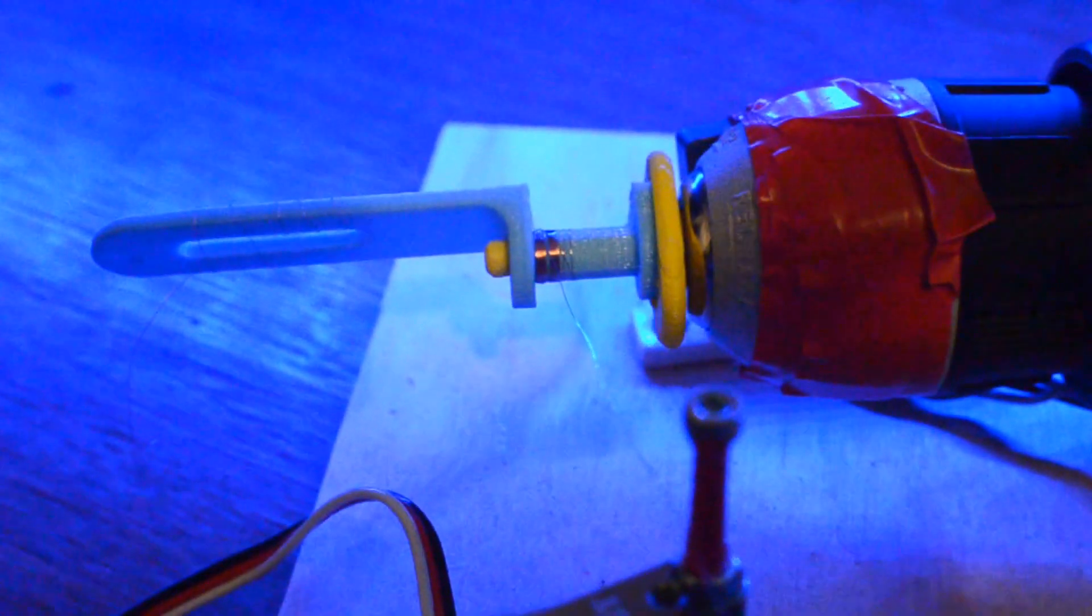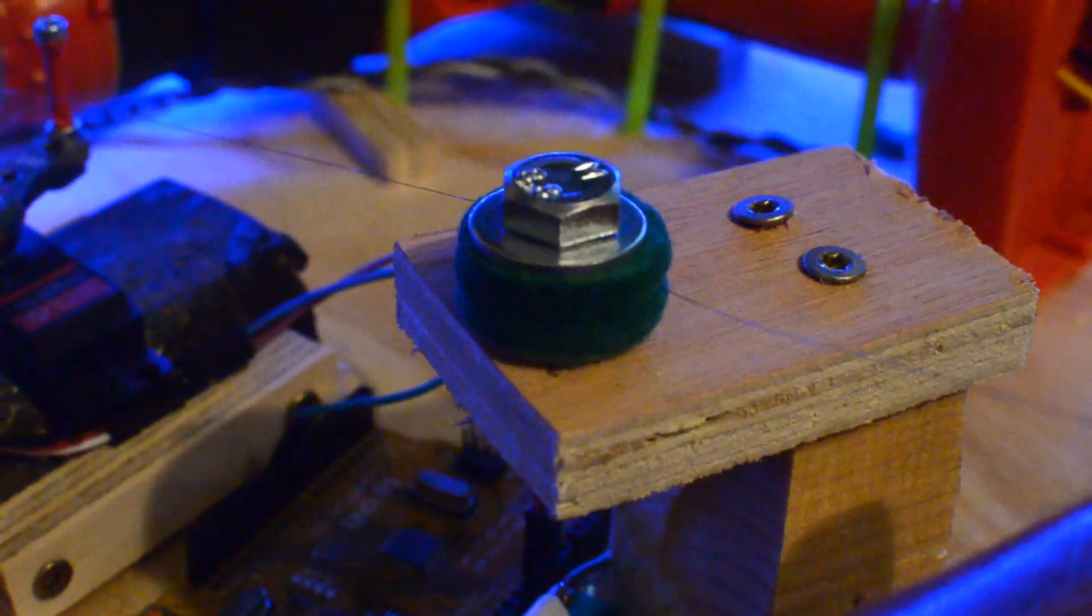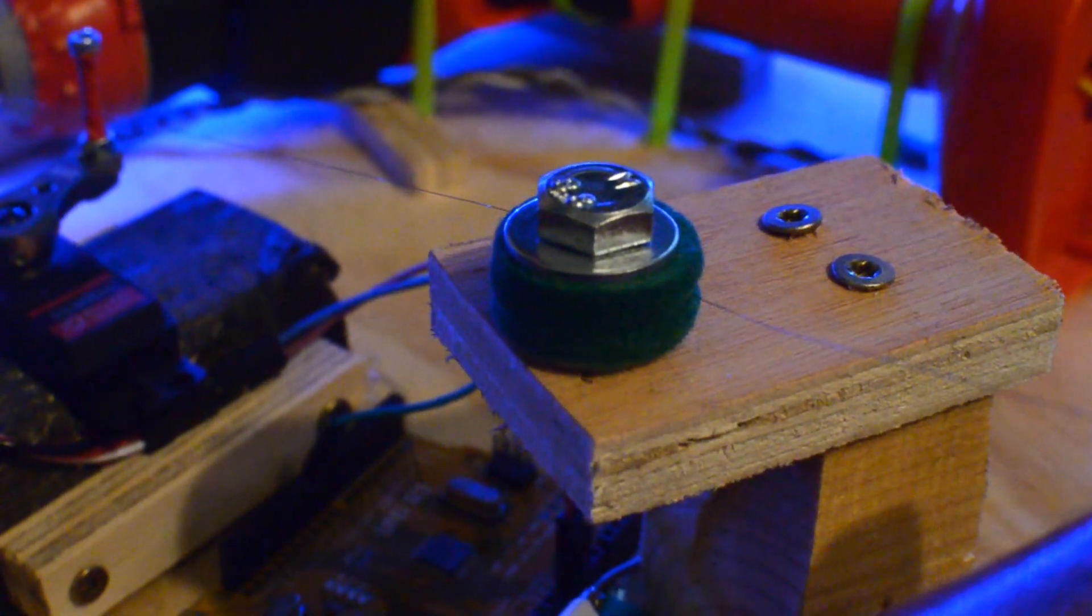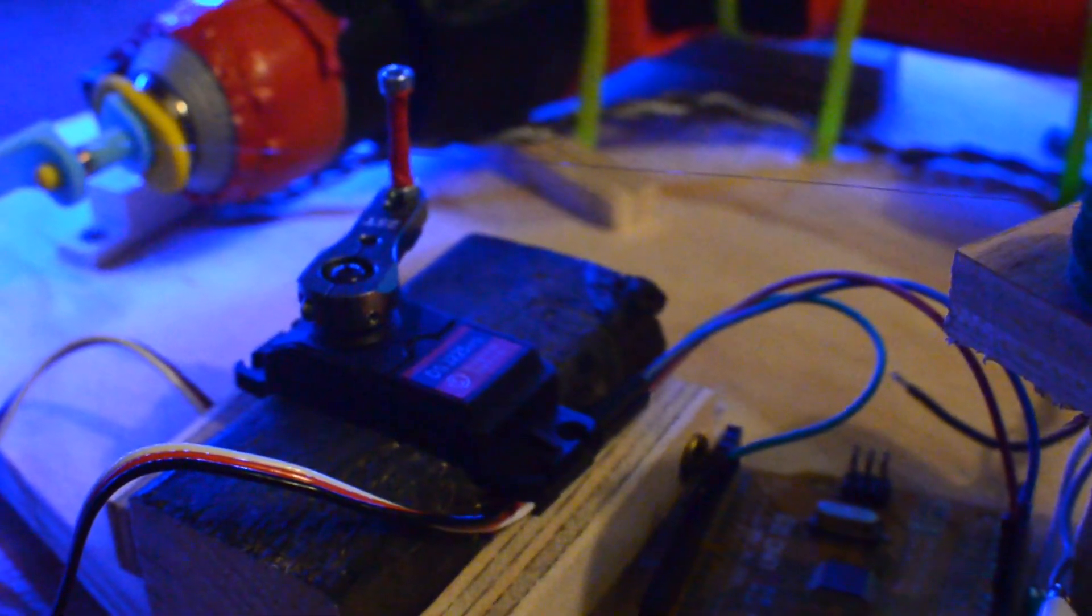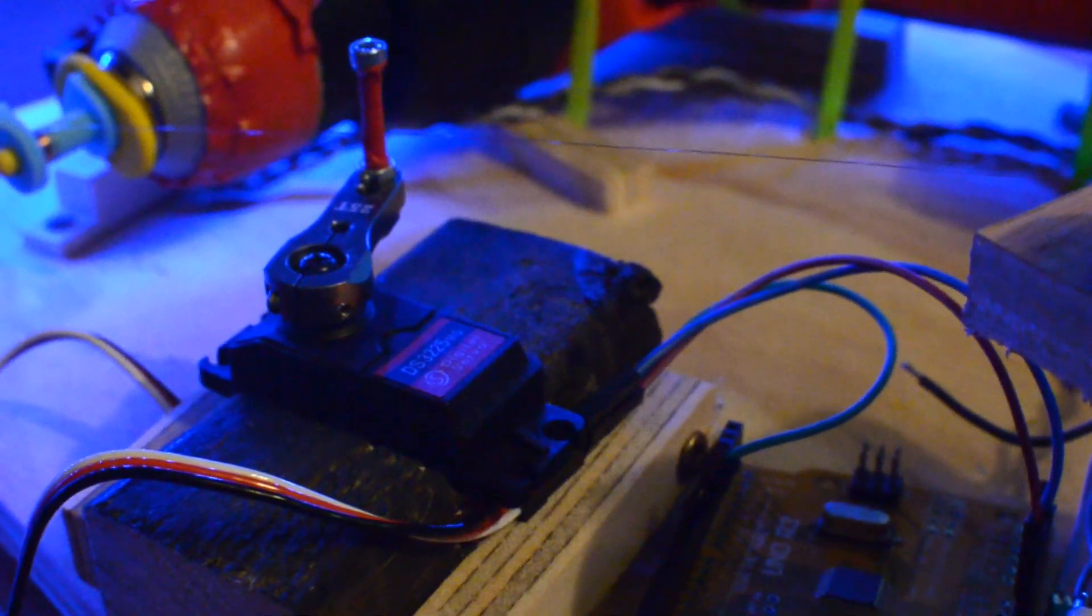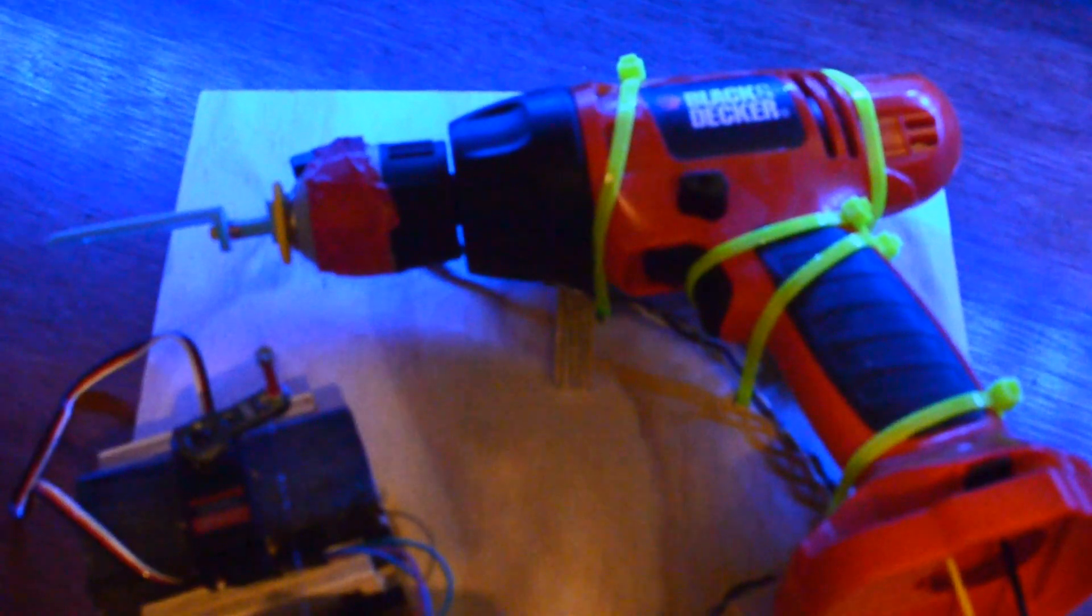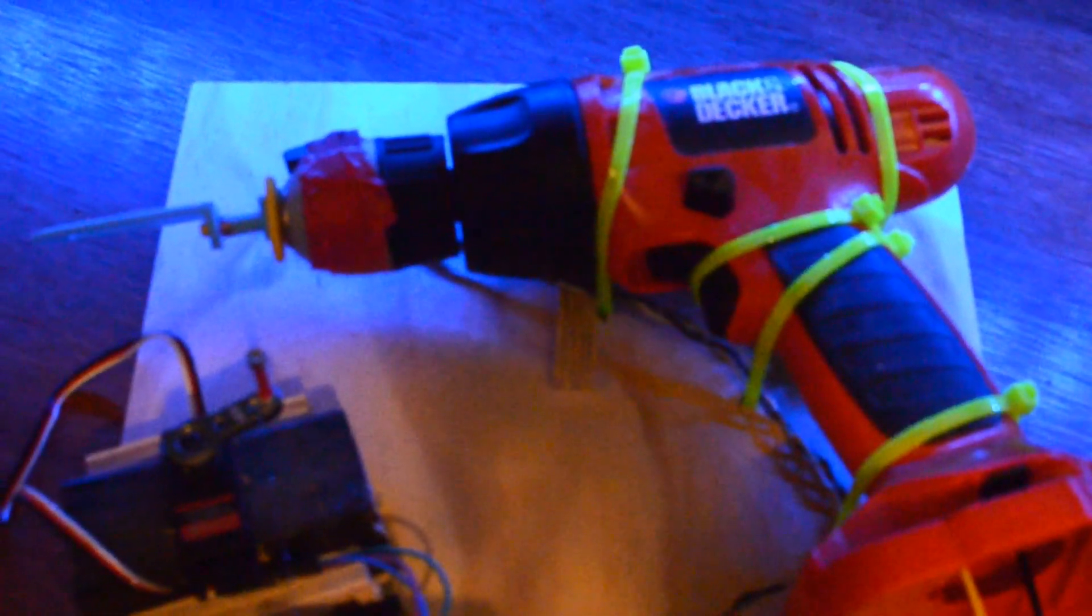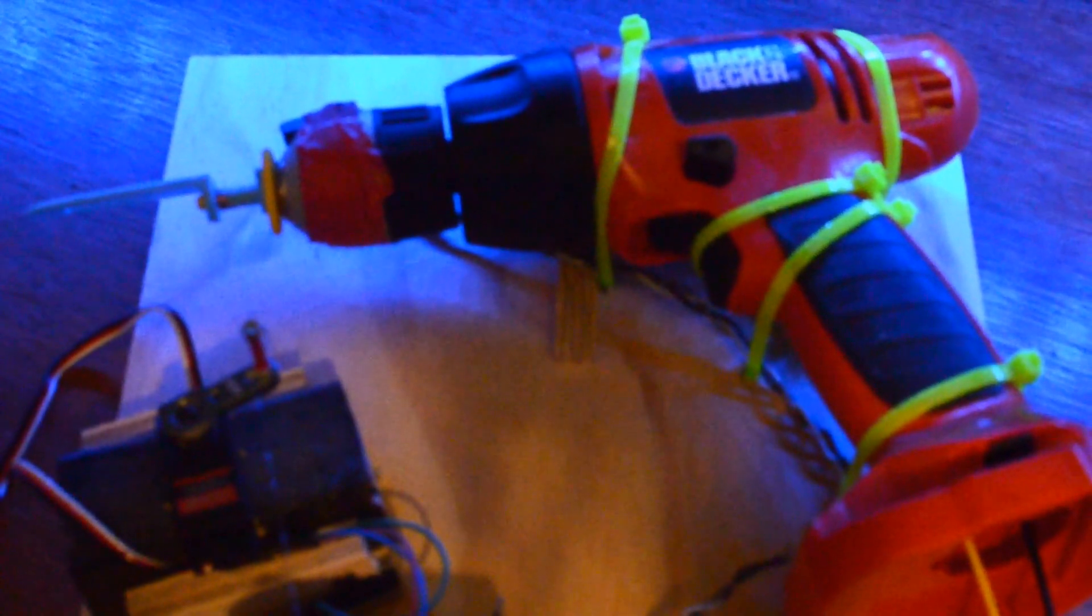This features a support for the wire. A bolt controls the tension and also fixes the direction that the wire is going to enter the jig at. A servo is the next thing that the wire is going to see, and this controls whereabouts on the bobbin the wire is going to be spooled onto. And then I've got a drill that's got a pickup attachment fixed to it.